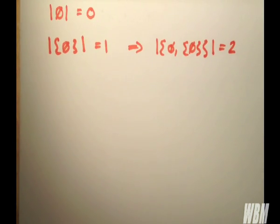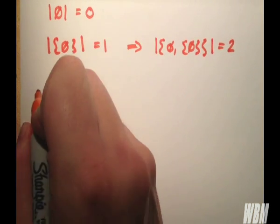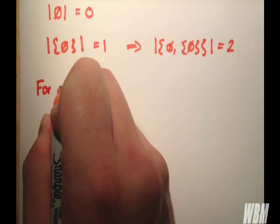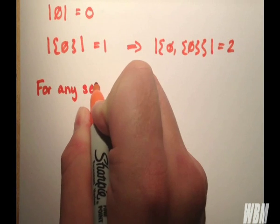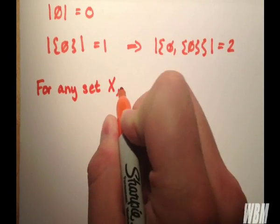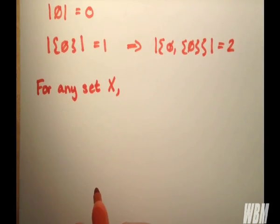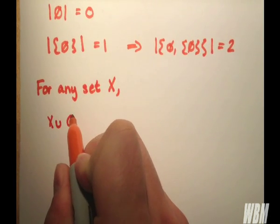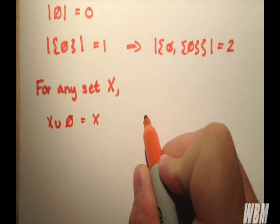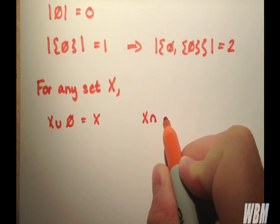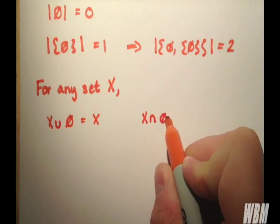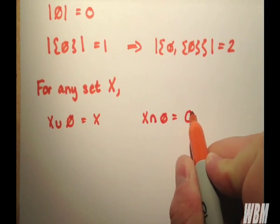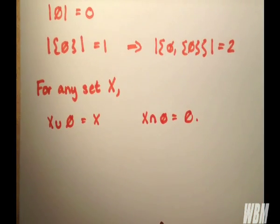And just to finish off, for any set x we have the x union empty set is x and x intersect the empty set. Here we go. And the empty set is the empty set. And I know these are quite straightforward but sometimes they can be difficult to get the head around.